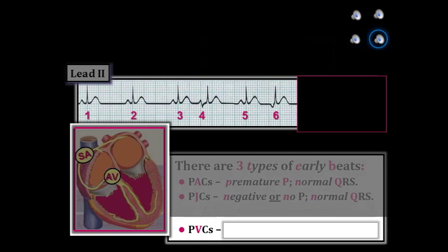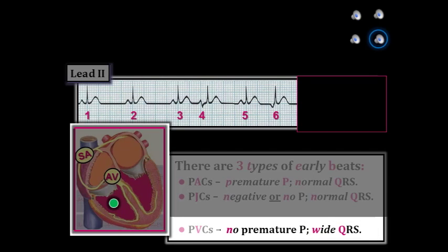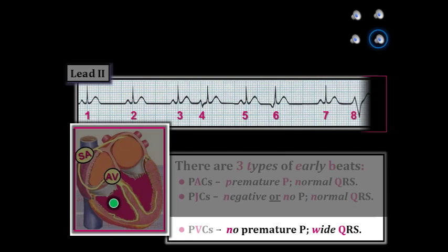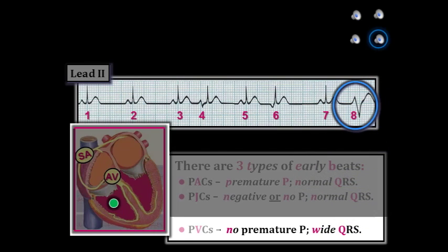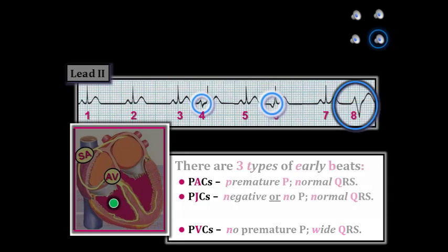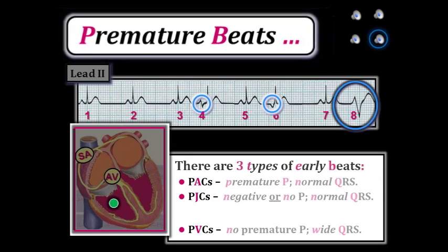PVCs make up the last category of early occurring beats. Here, the early impulse arises from the ventricles, so the QRS complex is wide and not preceded by a premature P wave. On this rhythm strip, beat number eight is a PVC — note the wide and very different looking QRS complex for beat eight with no early P wave in front of it. Keep in mind these three types of early beats. In the next slide, we'll take these concepts one step further.